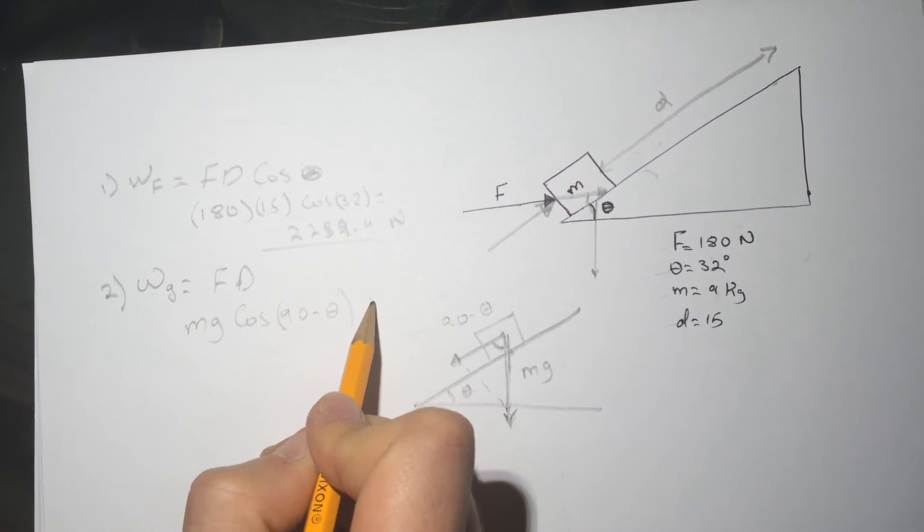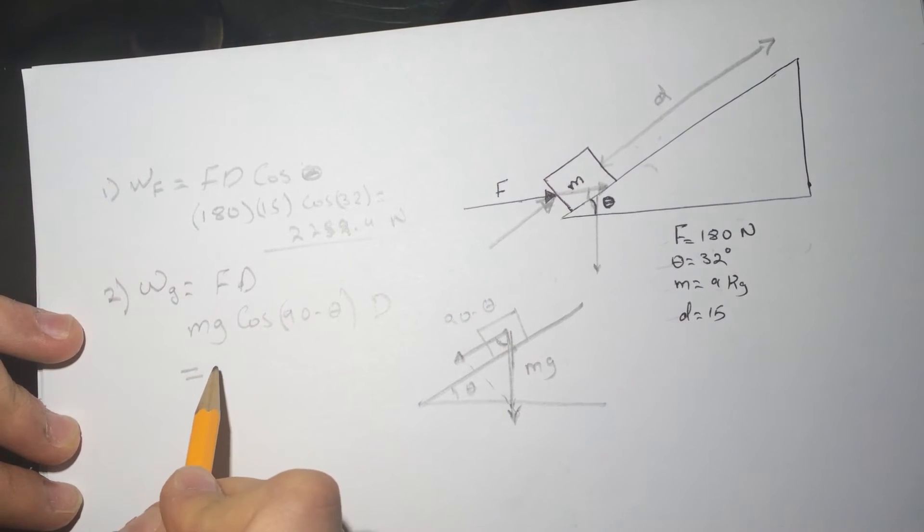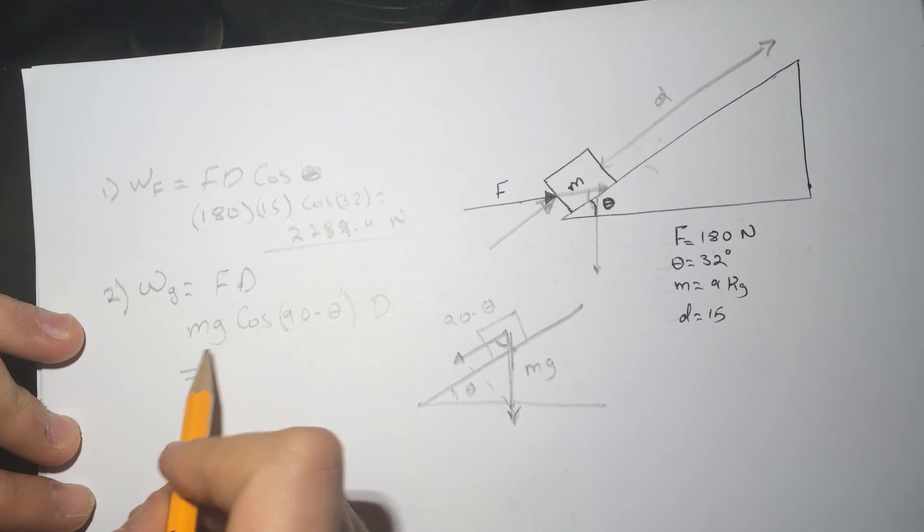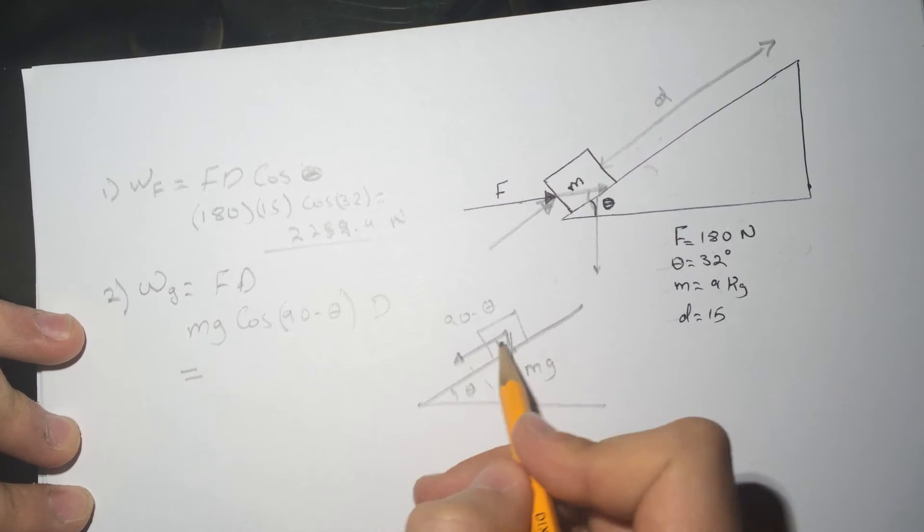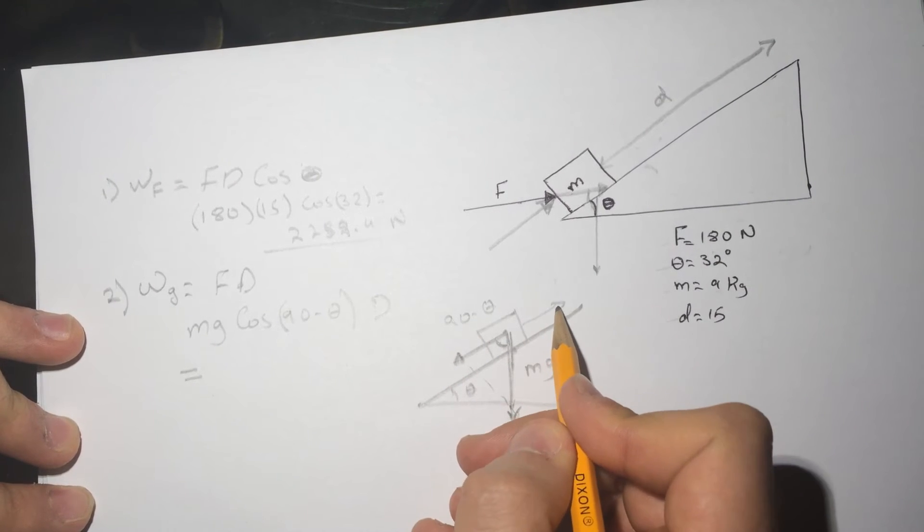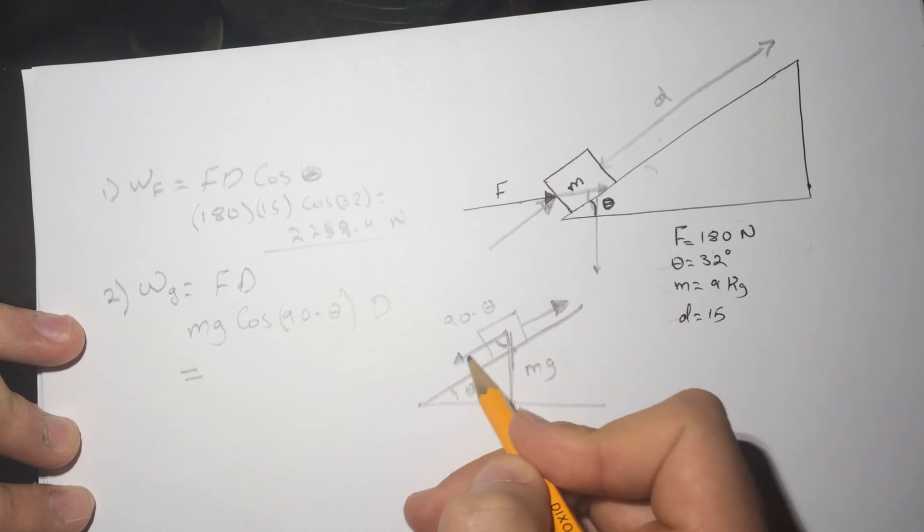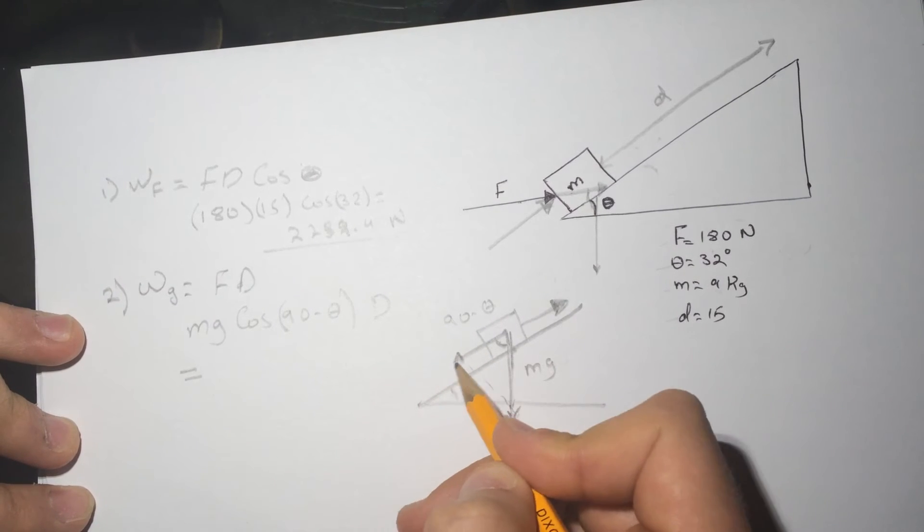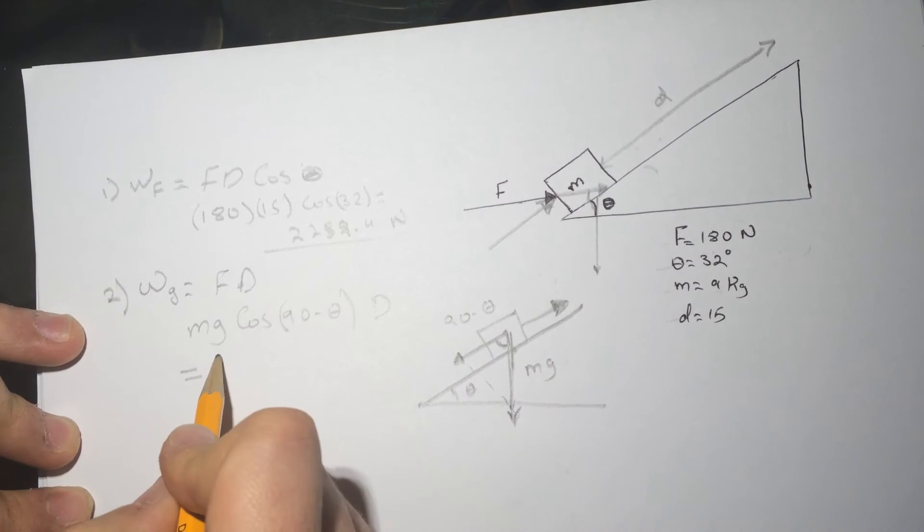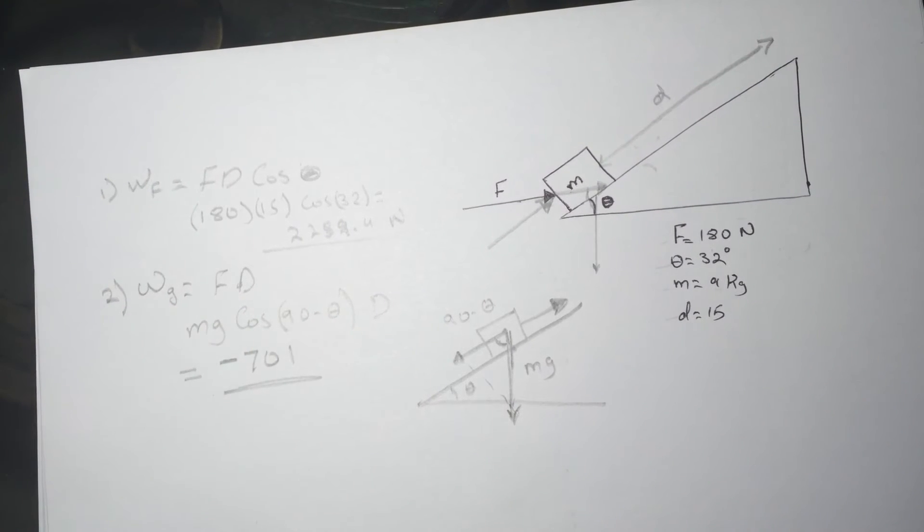All right, for this answer I got, and it's going to be a negative because the force is in the opposite way of how the box is moving. So the box is moving this way and the gravity, the force of the gravity is pointing in this direction. So it's got to be negative. So I got 701 for this one.